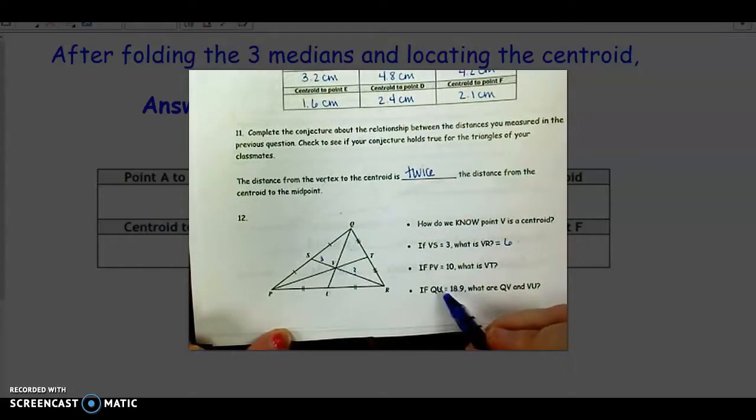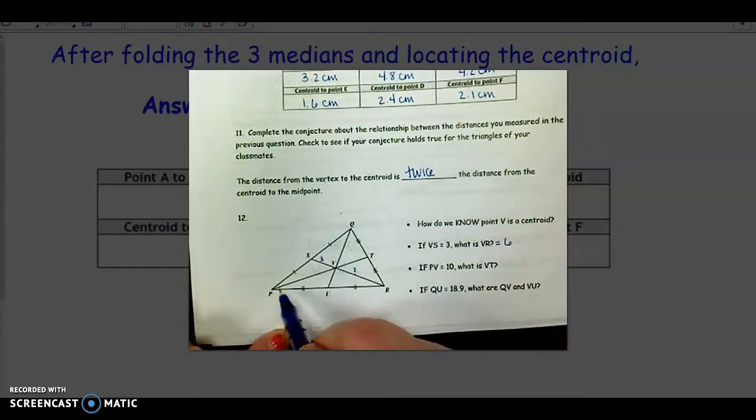On this second one, it says P to V is 10, and we want to know what is V to T. That's my question.